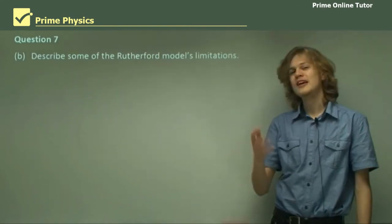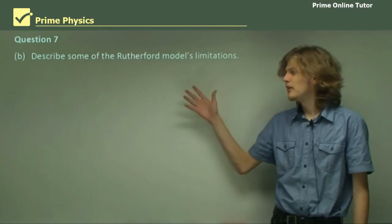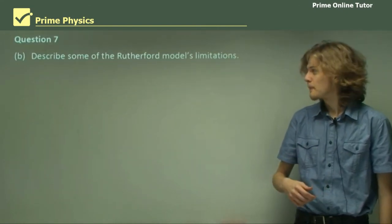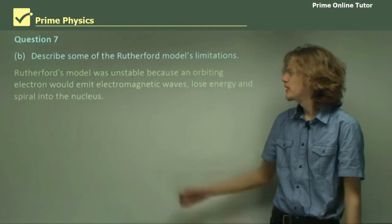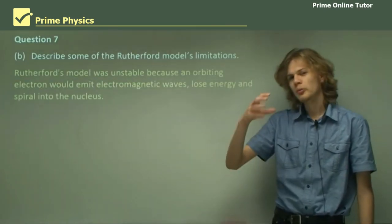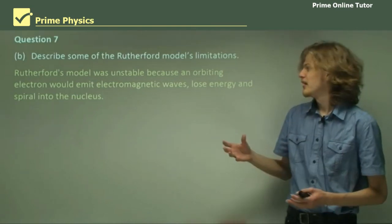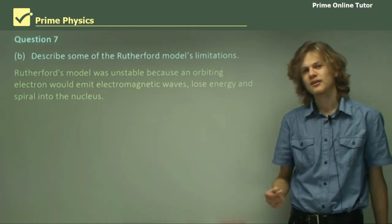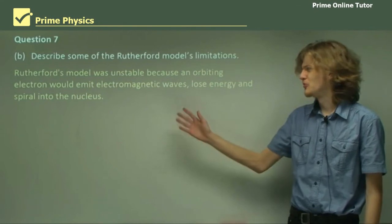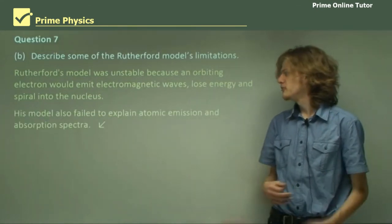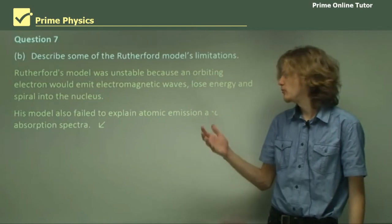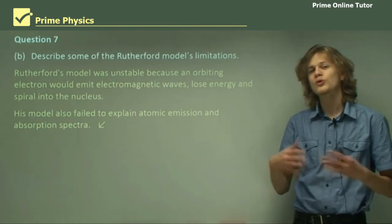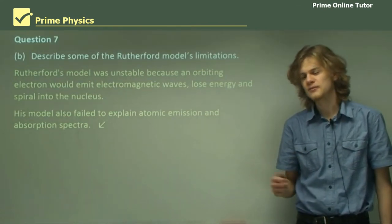Part B. Describe some of the Rutherford model's limitations. Obviously, it's a better model than the previous models, but it's still not perfect. A few of the imperfections are as follows. Rutherford's model was unstable, because an orbiting electron should be losing energy. If it's losing energy due to emitting electromagnetic waves, it would spiral into the nucleus and be destroyed. And we know that that doesn't happen, so the model's not right. His model also failed to explain atomic spectra, rather, emission spectra and absorption spectra. There are other later models of the atom which were able to explain this, but we'll get onto that in the next section.